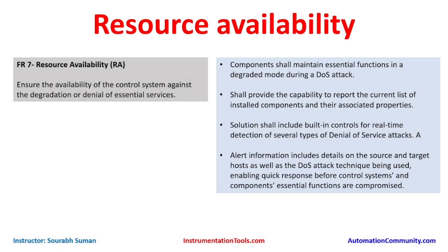Welcome to FR7, which covers resource availability. The basic requirement in just two lines is to ensure the availability of control systems against the degradation or denial of essential service. We need to check whether components shall maintain essential functions in a degraded mode during a DoS attack.